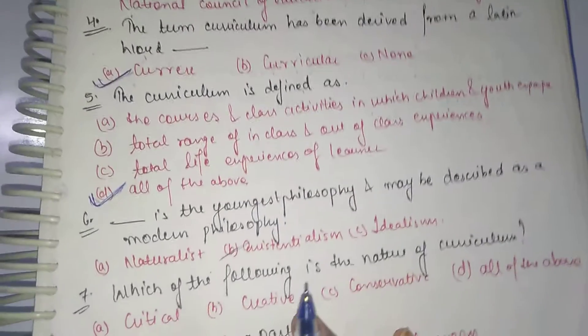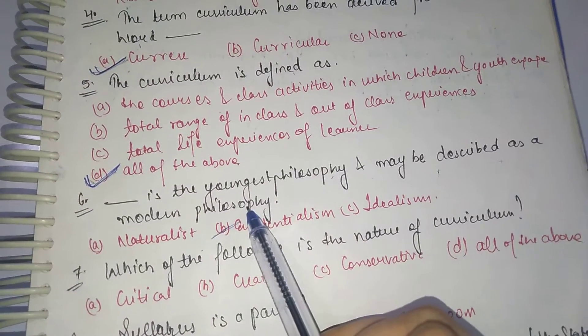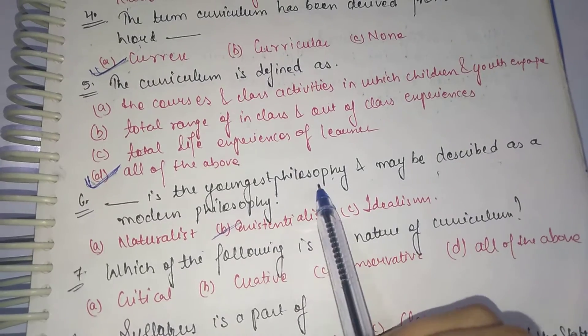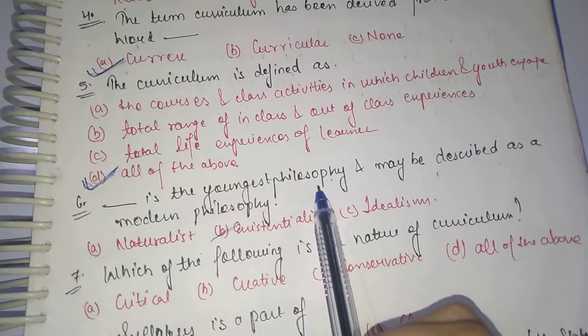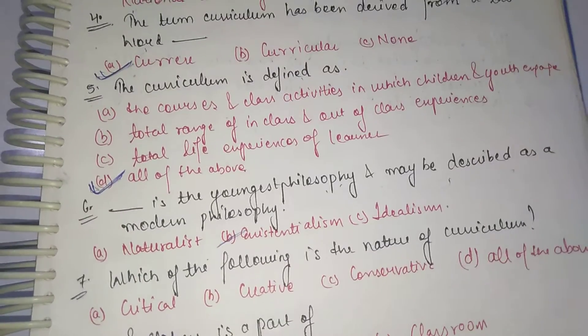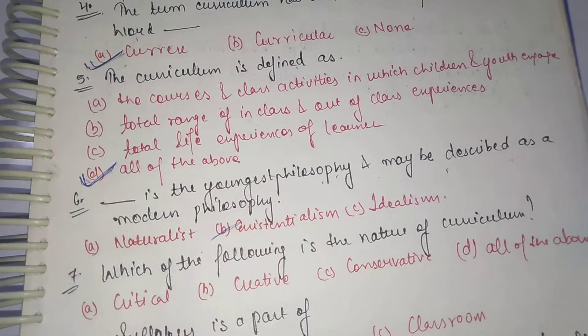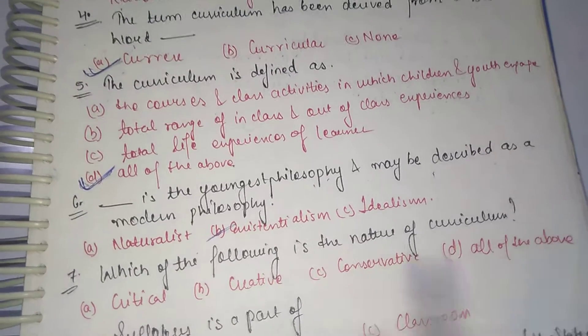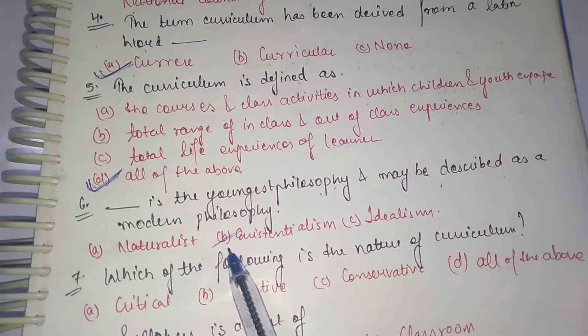Dash is the youngest philosophy and may be described as a modern philosophy. I have told you in my previous video about educational philosophy. The options are naturalism, existentialism, idealism, pragmatism. So here the question is the youngest philosophy, which is existentialism. That basically depends upon independence and self-expression.